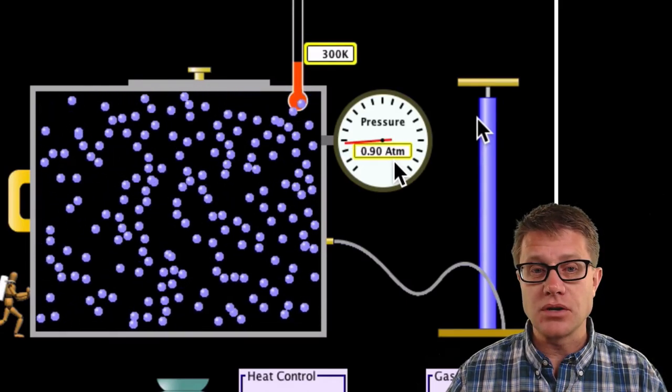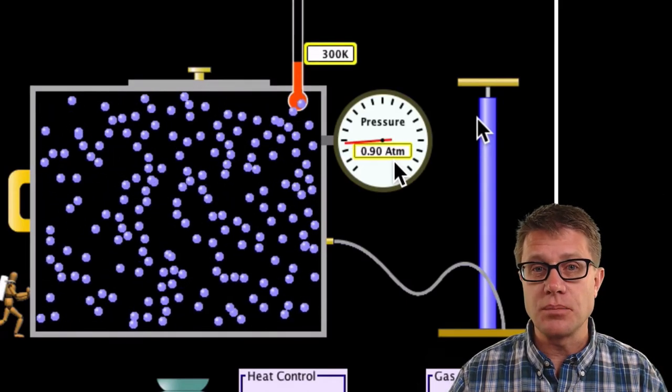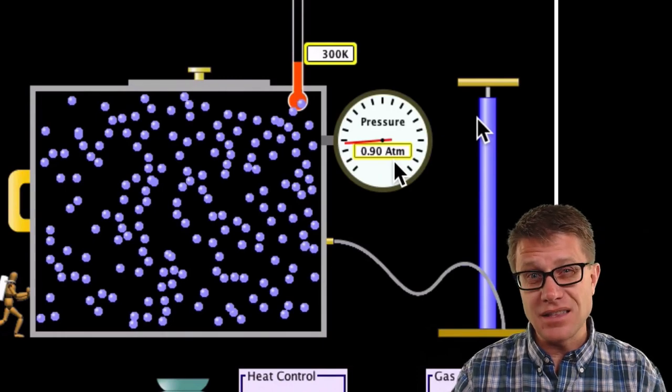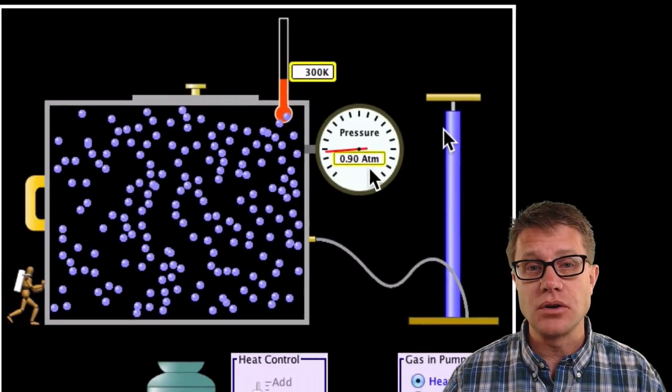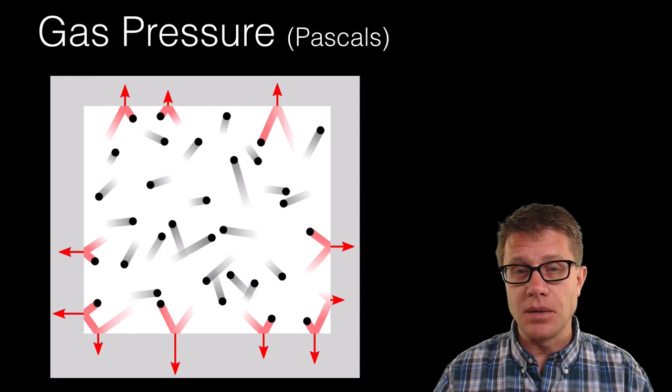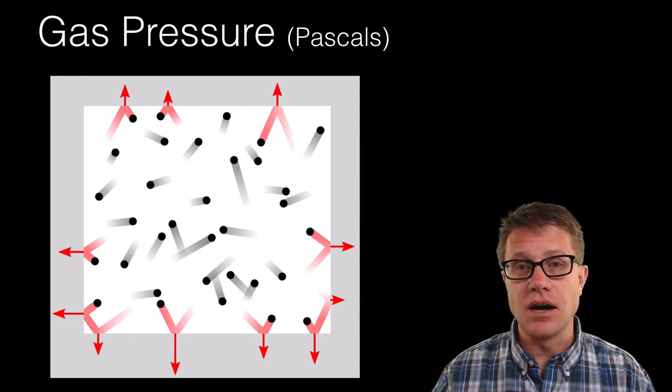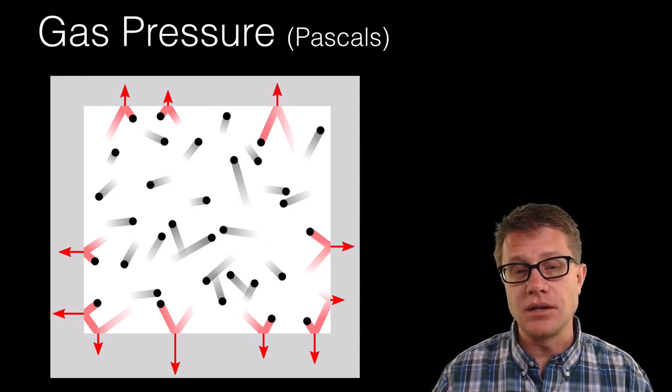How else could we increase the pressure? If we increase temperature we could increase the pressure. If we decrease the size of the container we could increase pressure as well. And so what is happening is the molecules are colliding with the sides of the container and that is what is creating this pressure.